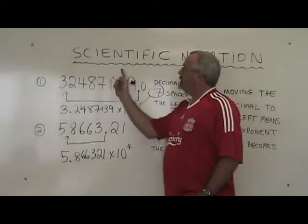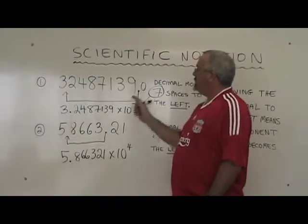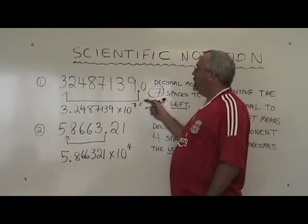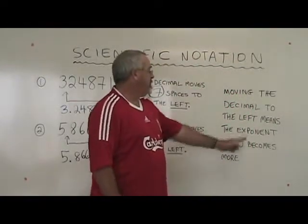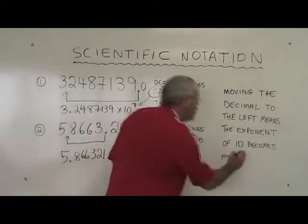The general rule in scientific notation is if you are moving your decimal to the left, the exponent of ten becomes more positive.